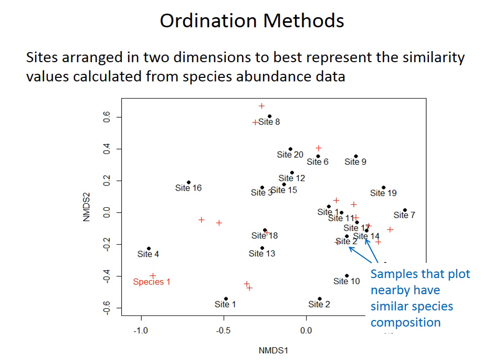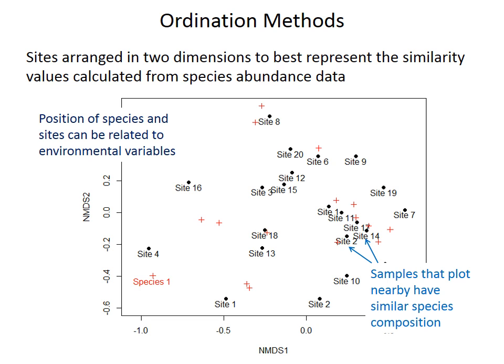A species common in Site 4 would be rare or absent in Site 7. This particular method also plots the species, shown as red crosses on the plot, and we can relate the position of the species and the sites to known or inferred environmental variables. So if we know Site 4 has low oxygen, we might think that species found there prefer or tolerate low oxygen conditions. We can relate these gradients in environmental conditions to the position of the sites and the species.